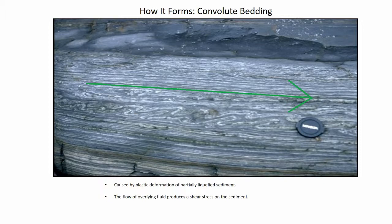Next, the flame structure. Flame structures are formed when the underlying bed has a higher density than the overlaying bed. Due to the difference in density, it creates an unstable situation.